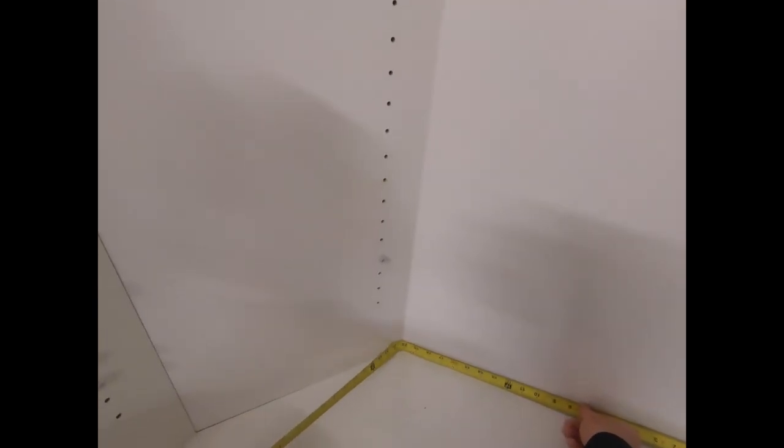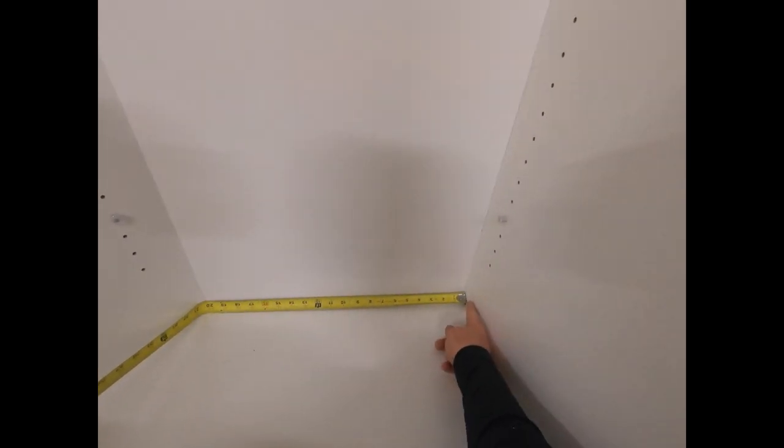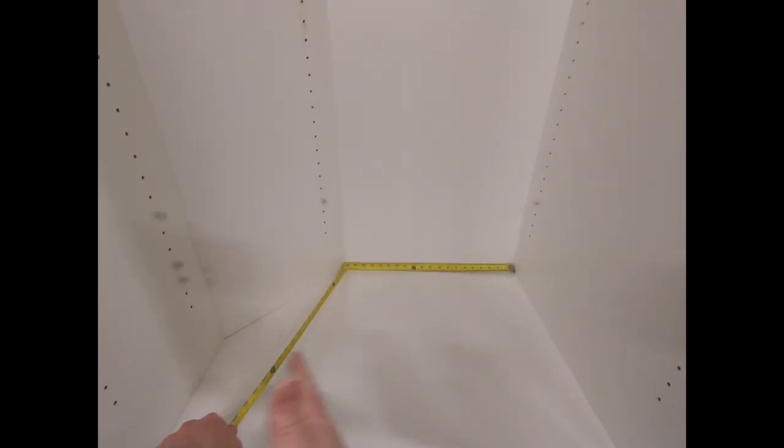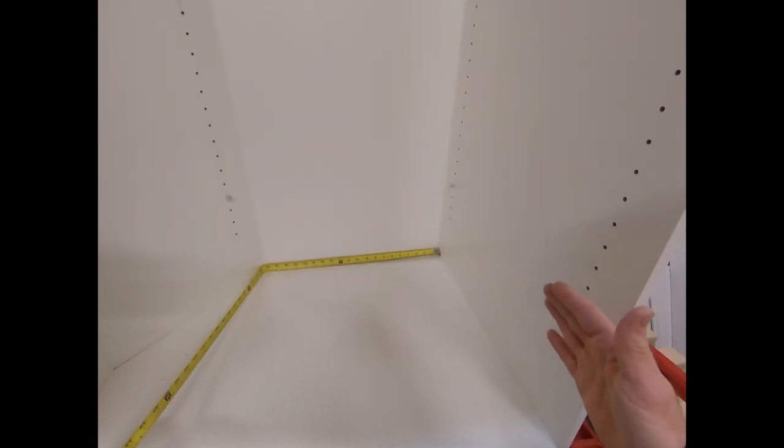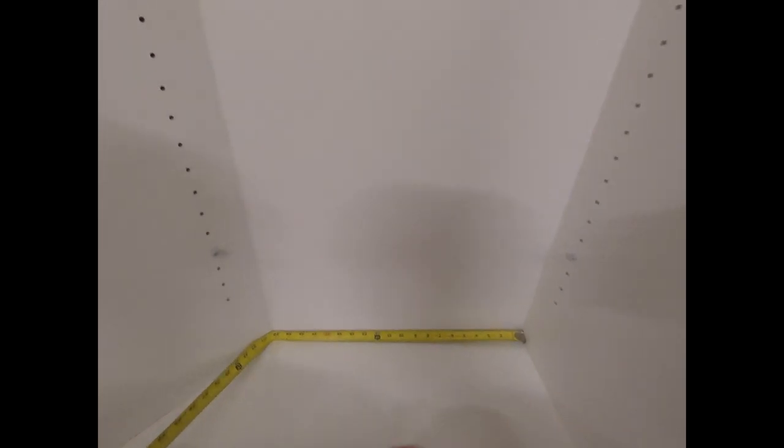Now, to get this funky angle here, and it is funky, that's 20 and a quarter from this edge to there. I'm going to deduct a 16th, because overall I'm smaller by an eighth. So I want equal space on either side. So I deduct a 16th